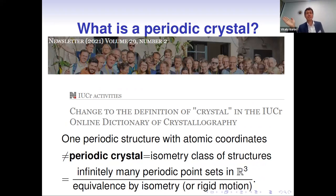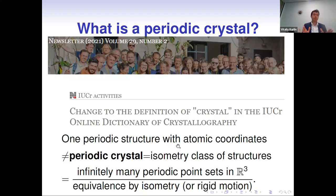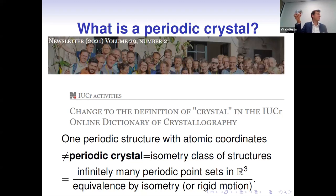It was somewhat surprising that crystallographers were still discussing the definition of a crystal as recently as April 2021. Our suggestion is to define a periodic crystal not as a single periodic structure with fixed atomic coordinates as in a CIF file, but as a class of structures all equivalent to each other up to rigid motion — equivalent up to isometry.